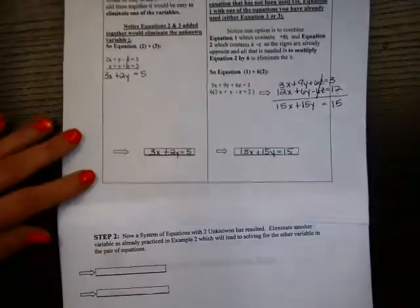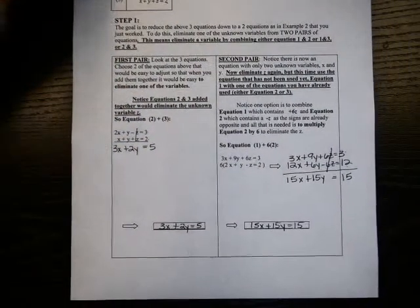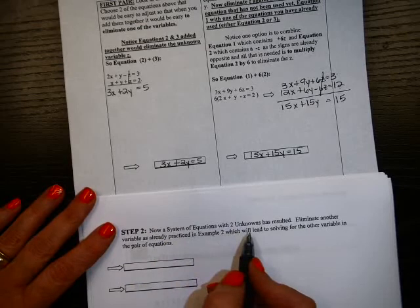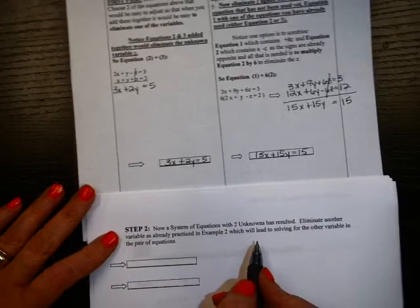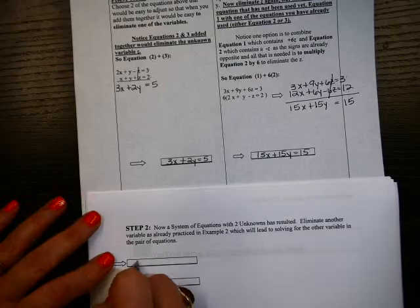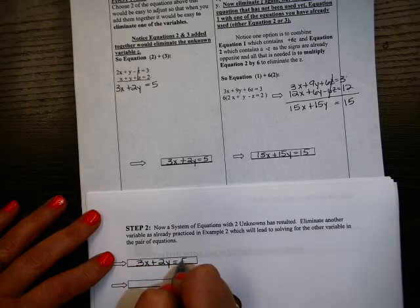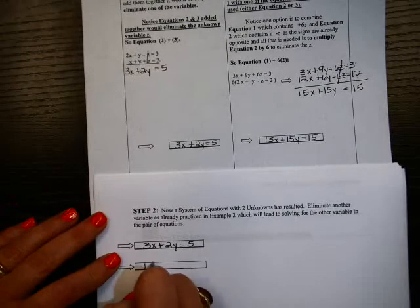So I'm going to go to step two now. I've just created, I've gone from a system of three to a system of two. So I'm going to work on that. It says we have two unknowns. And we've already learned how to handle that in example two. So I'm going to copy those two equations down to start my new system in solving it.